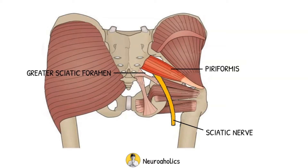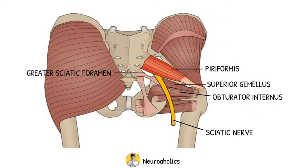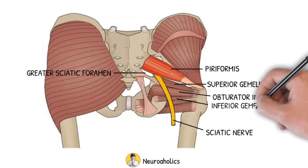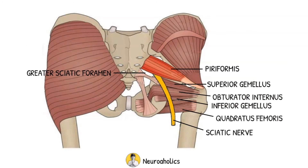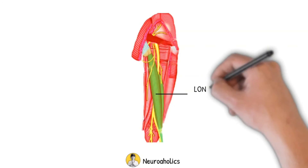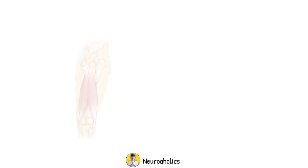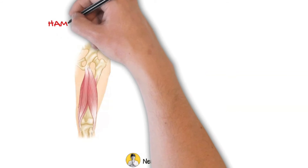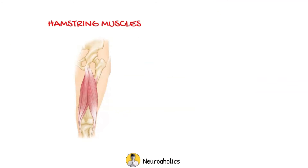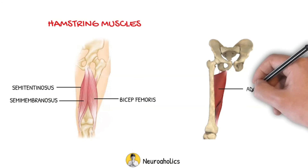It crosses the posterior surface of the superior gemellus, obturator internus, inferior gemellus, and quadratus femoris muscles. It then enters the posterior thigh by passing deep to the long head of the biceps femoris. Within the posterior thigh, the nerve gives rise to branches to the hamstring muscles — biceps femoris, semimembranosus, semitendinosus — and adductor magnus.